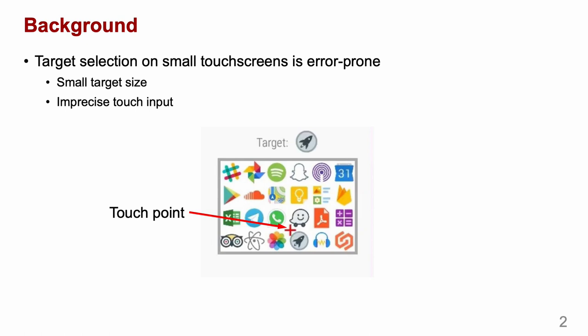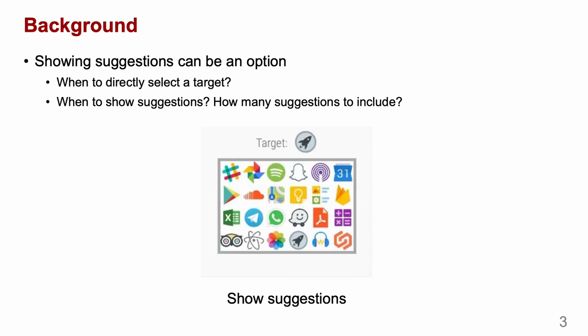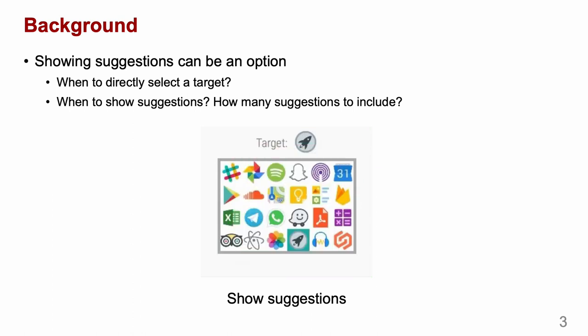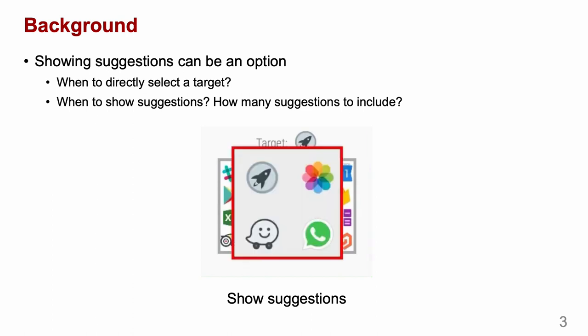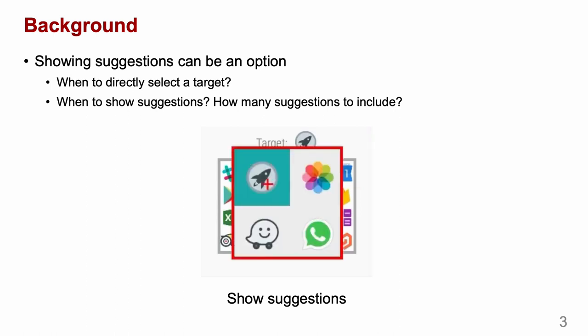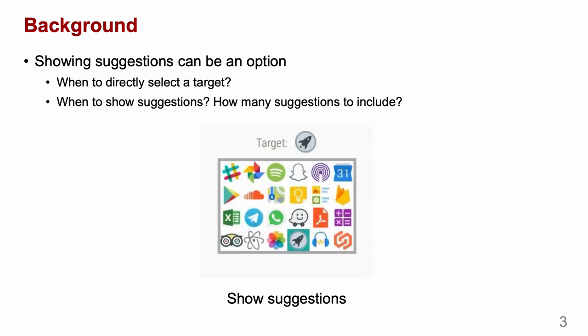Target selection on small touchscreens is error-prone because of the small target size and imprecise touch input. To solve the problem, a suggestion-based method can be an option. That is, when ambiguity is present in the touch input, show suggestions for confirmation. To achieve that, we need to decide when to directly select a target and when to trigger suggestions.